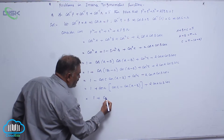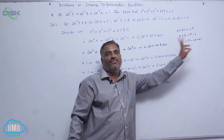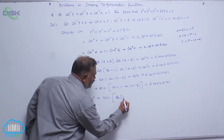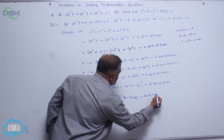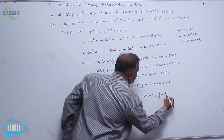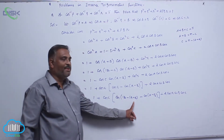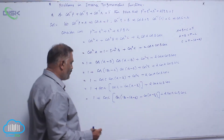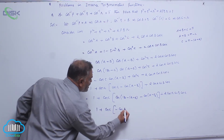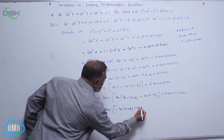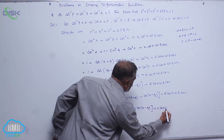Writing C as 180 minus (A plus B), cos C becomes cos of (180 minus (A plus B)). Since 180 minus theta belongs to the second quadrant, cosine is negative. This gives 1 plus cos C into [minus cos C into minus cos of (A minus B)] plus 2 cos A cos B cos C.